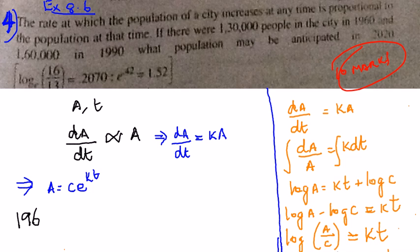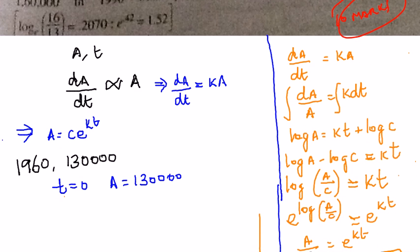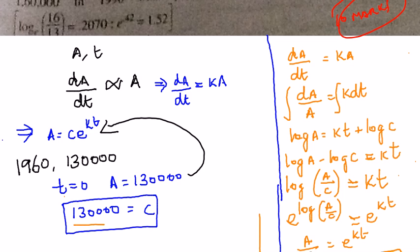They say that in the year 1960 the population was 1,30,000. Let us assume at time T equal to 0, that is the first time they took the reading, at 1960 the population was 1,30,000. Now let us substitute these values in this equation. 1,30,000 is equal to C into e power k into 0. E power 0 is 1. Therefore you get that C is equal to 1,30,000.